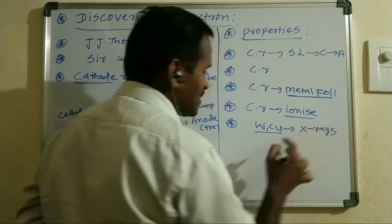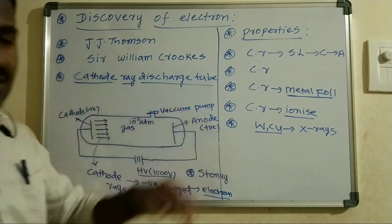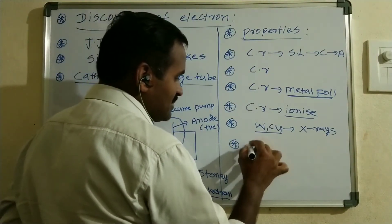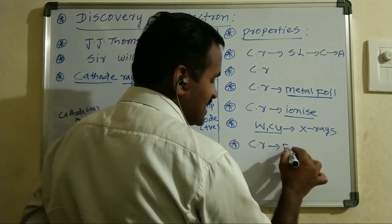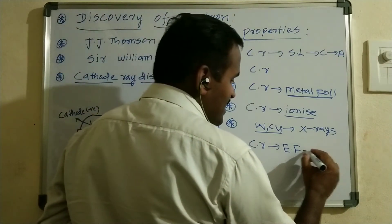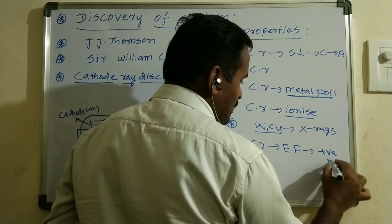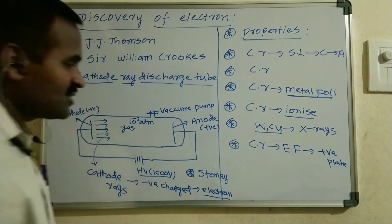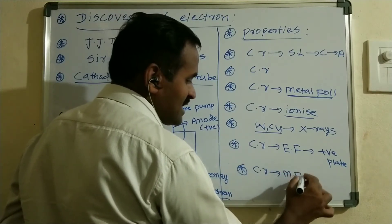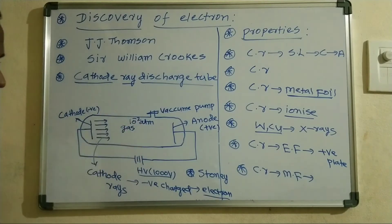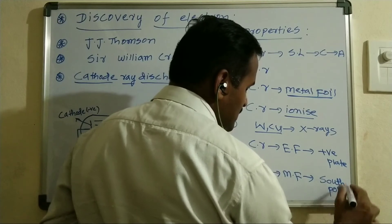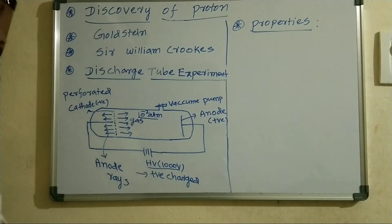If you place tungsten or copper metal in the direction of cathode rays, X-rays are also produced when the cathode rays strike the surface of that metal. Also, if an electric field is placed in the direction of cathode rays, the cathode rays are deviated towards the positively charged plate. If a magnetic field is placed, cathode rays deviate towards the south pole.